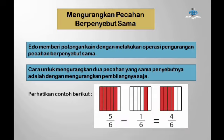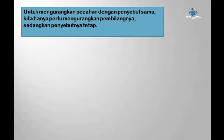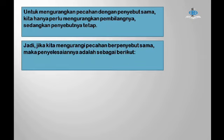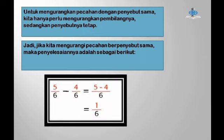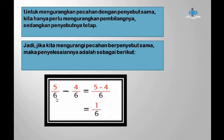Perhatikan contoh berikut: 5/6 dikurangi 1/6 sama dengan 4/6. Untuk mengurangkan pecahan berpenyebut sama, kita hanya perlu mengurangkan pembilangnya, sedangkan penyebutnya tetap. Angka yang berwarna merah adalah pembilang, yang berwarna hitam adalah penyebut. Karena penyebutnya sama, yaitu 6, maka kita cukup perhatikan pembilangnya saja, yaitu 5 dan 4. Berarti, 5/6 dikurangi 4/6 sama dengan (5 dikurangi 4)/6, hasilnya adalah 1/6.